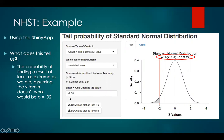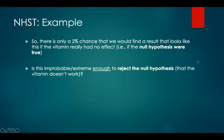We use the standard normal distribution to ask how improbable it would be to see a baby walk this early if it came from the null distribution — the distribution in which the vitamin had no effect. Entering our z-score of negative 2 returns a probability of 0.02. This tells us that the probability of finding a result as extreme as we did, assuming the vitamin doesn't work, would be p equals 0.02, or a 2% probability. There's a 2% chance we would find a result like this if the vitamin really had no effect, or if the null hypothesis were true.